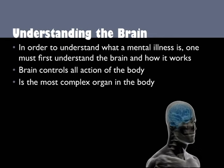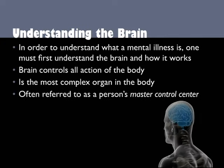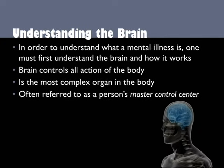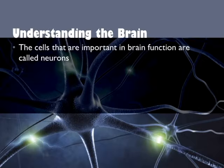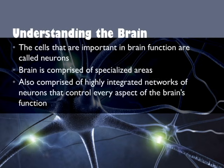The brain is our most complex organ. It is often referred to as a person's master control center because it controls all the functions of our bodies. The cells that are important in brain function are called neurons. A neuron is a specialized cell that can produce different actions because of its precise connections with other neurons, sensory receptors, and muscle cells. The brain is comprised of specialized networks of neurons that control things like movement and vision, but also very complex and highly integrated networks of neurons which control every single aspect of the brain's function.